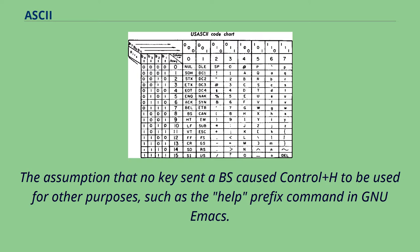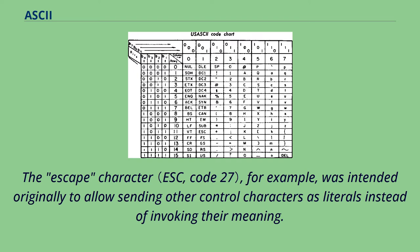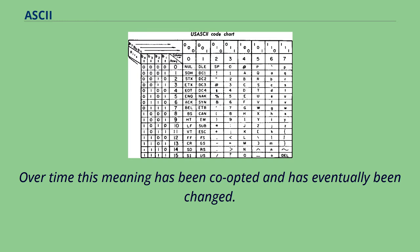The assumption that no key sent a BS caused Ctrl+H to be used for other purposes, such as the help prefix command in GNU Emacs. Many more of the control codes have been given meanings quite different from their original ones. The escape character, for example, was intended originally to allow sending other control characters as literals instead of invoking their meaning. This is the same meaning of escape encountered in URL encodings, C-language strings, and other systems where certain characters have a reserved meaning. Over time this meaning has been co-opted and eventually changed.